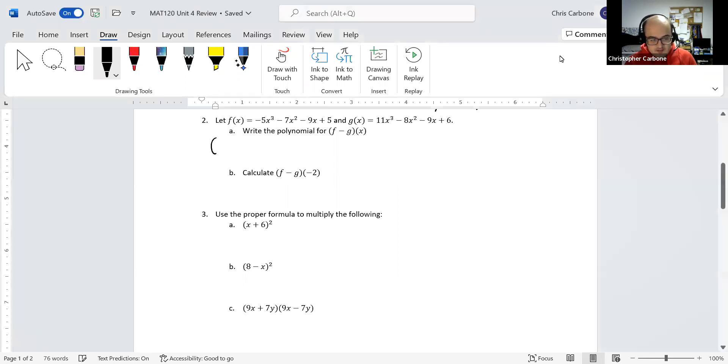So negative 5x cubed minus 7x squared minus 9x plus 5, minus 11x cubed minus 8x squared minus 9x plus 6.